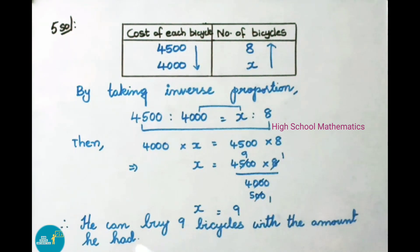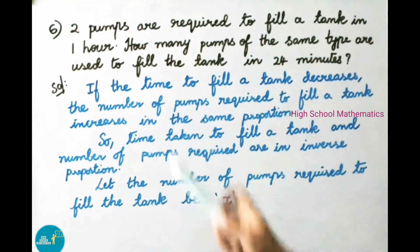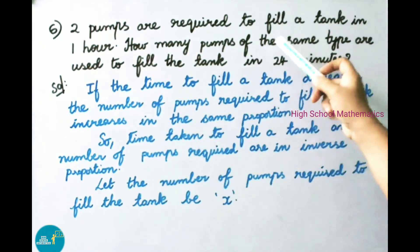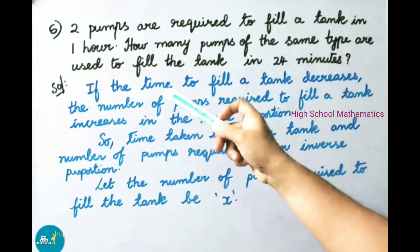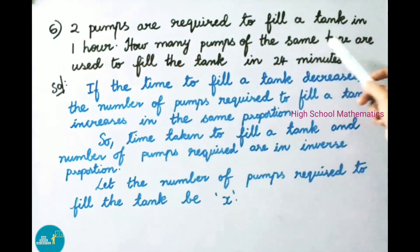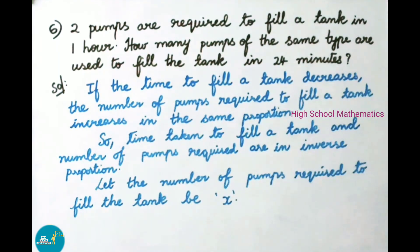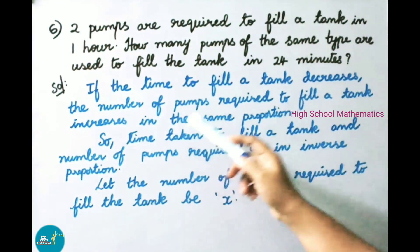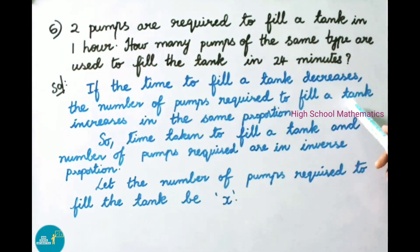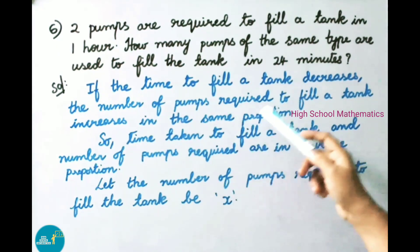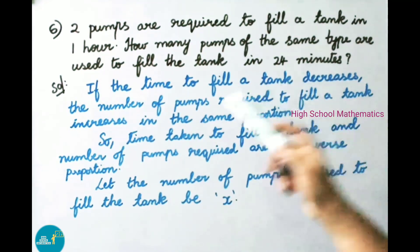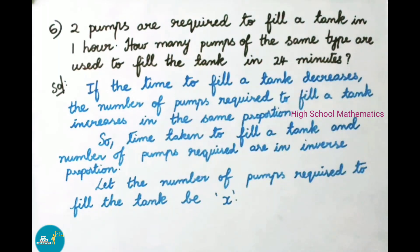Therefore, he can buy 9 bicycles with the amount he had. See now question number 6. Two pumps are required to fill a tank in one hour. How many pumps of the same type are used to fill the tank in 24 minutes? Let us see the solution. If the time to fill a tank decreases, the number of pumps required to fill a tank increases in the same proportion.